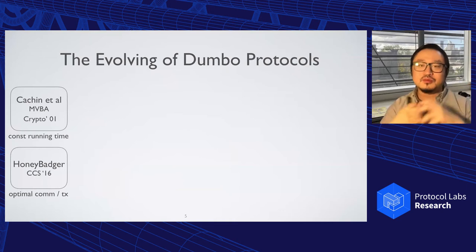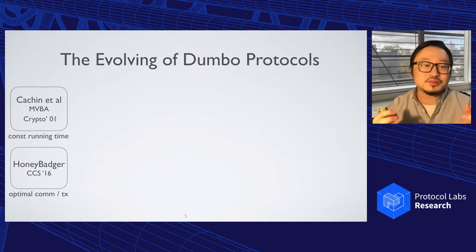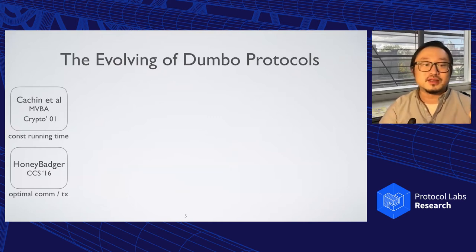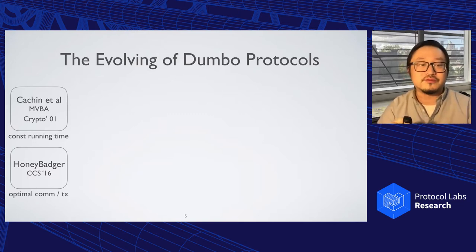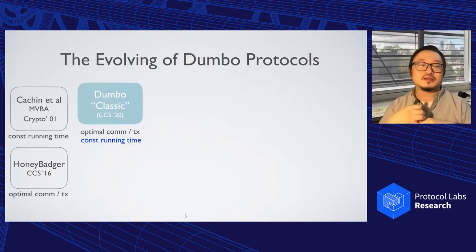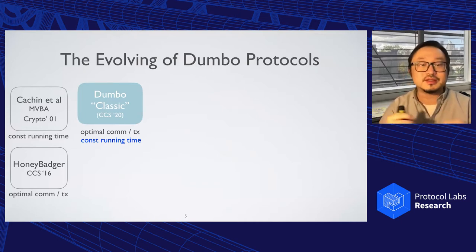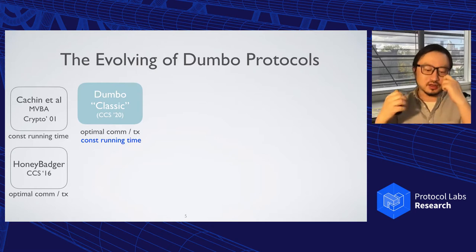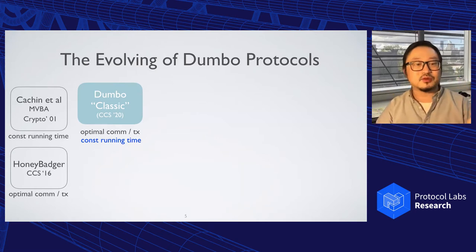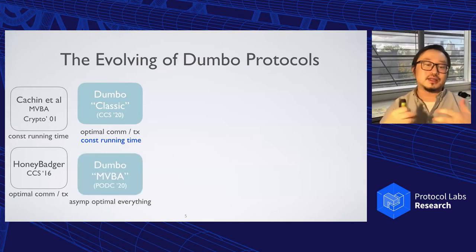We give a more affirmative answer to this question, but we do need some efforts. The evolution of the Dumbo protocol starts from HoneyBadger, but one of the critical sources of inspiration comes from a very similar result by Cachin et al. from about 20 years ago. They formulated a nice notion called the multi-valued validated Byzantine agreement, called MVBA. In our earlier work, the protocol we call Dumbo Classic, we remove a major bottleneck in HoneyBadger — we can preserve their optimal linear per-transaction communication, while at the same time not needing to run many randomized protocols. We basically get the best of both Cachin et al. and HoneyBadger, and we also improve the critical component of MVBA itself.